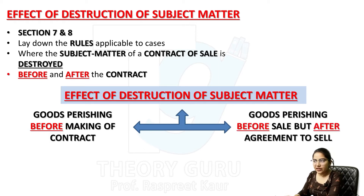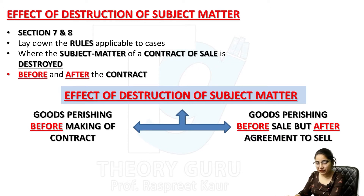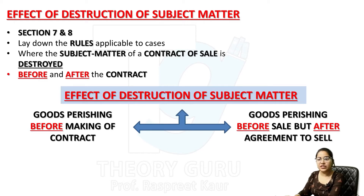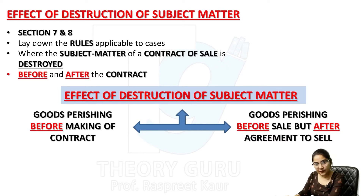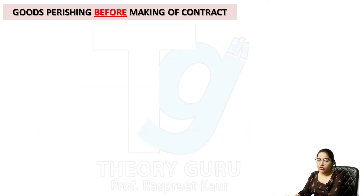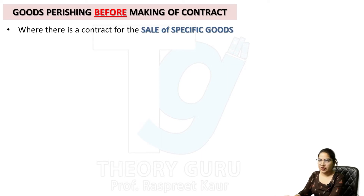दोनों में difference clear करो। पहले case में — before making of contract — contract में enter होने से पहले अगर goods perish हो जाते हैं। दूसरे में — goods perishing before sale but after agreement to sell। So first case: goods parishing before making of contract।